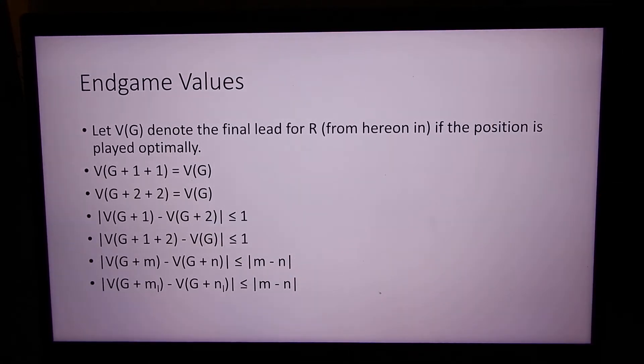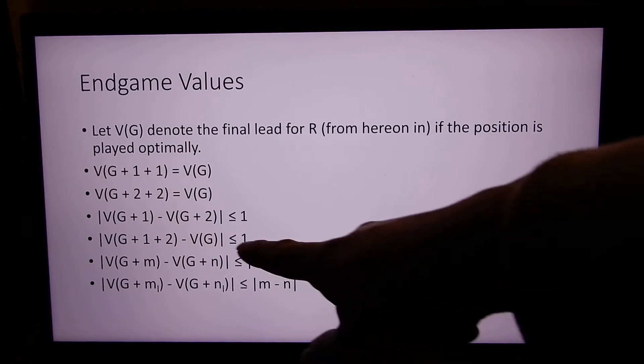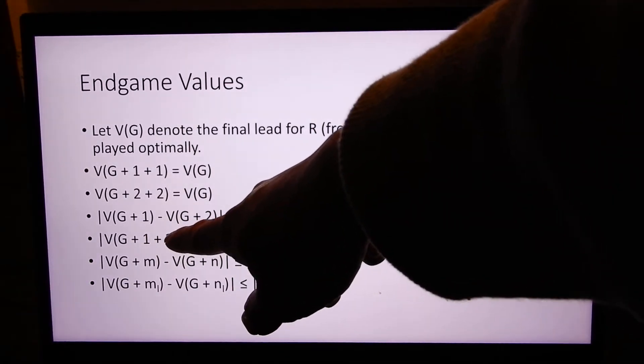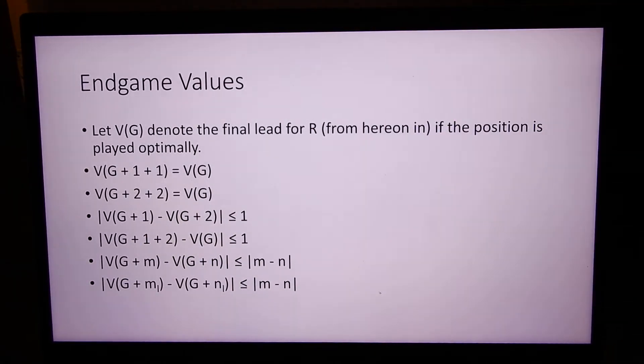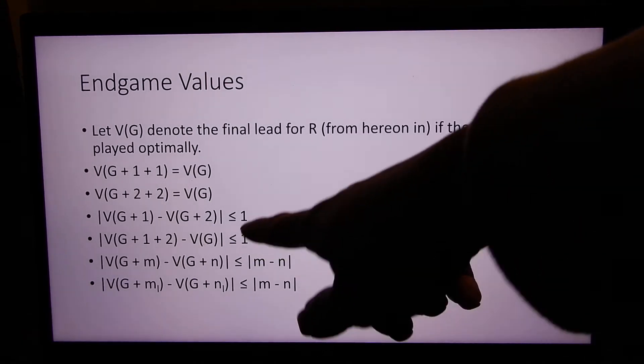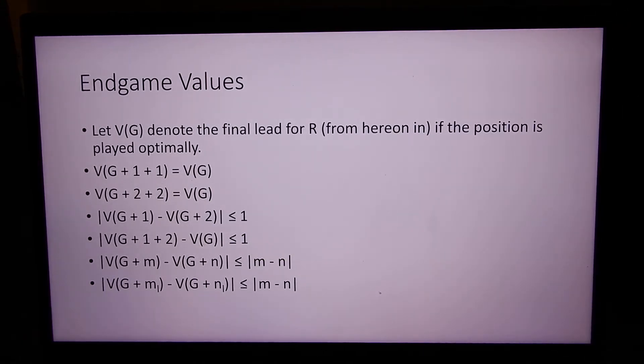If you have two short chains and they are one and two boxes, they could differ by at most a value of one. Similarly, having a box of one and two can change the value by at most one. And if you have long chains and long loops, the difference in value is at most the difference in the chain or the loop.